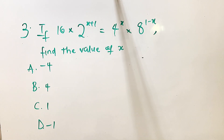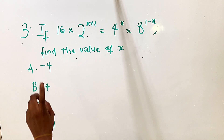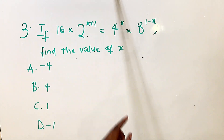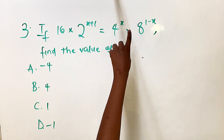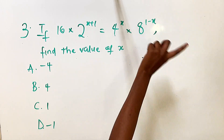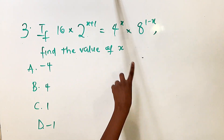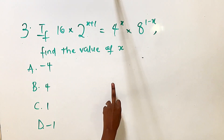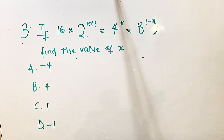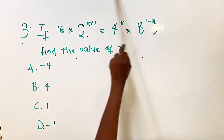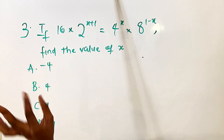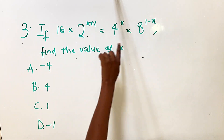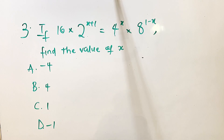Our third question says: if 16 multiplied by 2 raised to the power of x plus 1, is equal to 4 raised to the power of x times 8 raised to the power of 1 minus x, find the value of x. The first thing to do is put everything in the same base. All these numbers are multiples of 2, so we can give them all base 2.